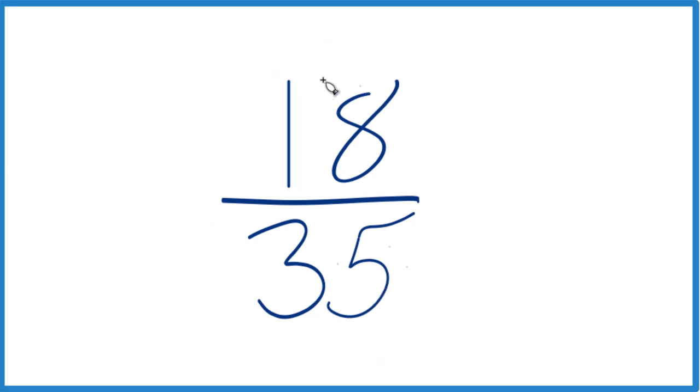What we need to do, find a common factor, something that goes into 18 and 35 evenly. We're looking for a whole number, it's called the common factor, and we want the greatest common factor.